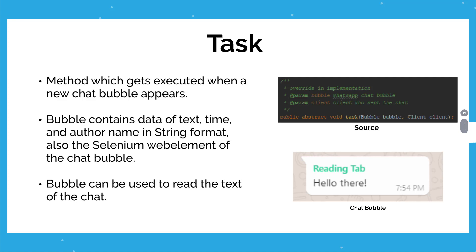Then you will need to implement the task method. The task method gets executed each time a new chat appears in the group. The bubble parameter includes all the data from the text, and the client is the client which sent the text.